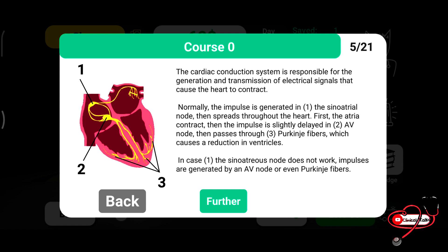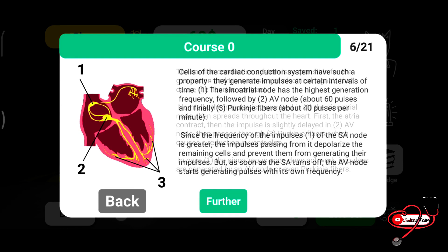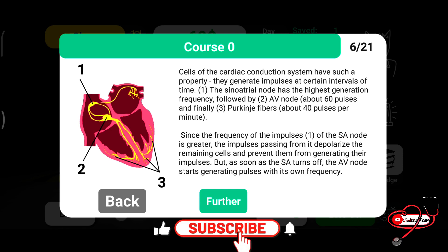Then the impulse fast-forwards to number 3, called the Purkinje fiber, causing contraction in the ventricles. In the case that the SA node does not work, the impulse can be generated by the AV node or even the Purkinje fiber. Cells of the cardiac conduction system generate impulses at certain intervals. The SA node has the highest generation frequency, the AV node around 60 pulses per minute, and the Purkinje fiber around 40 pulses per minute.